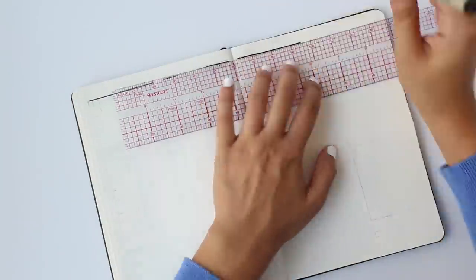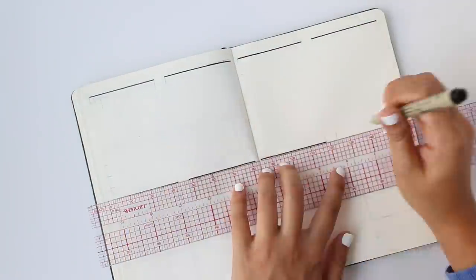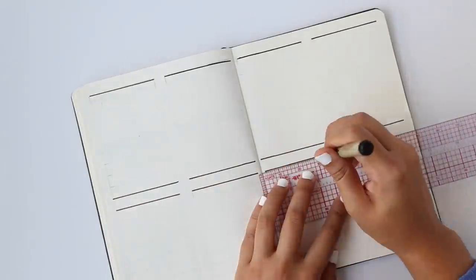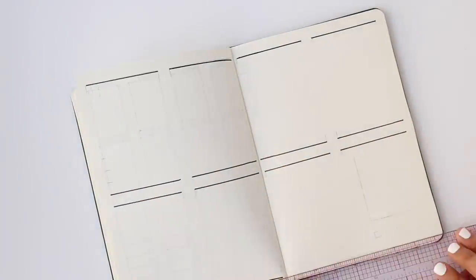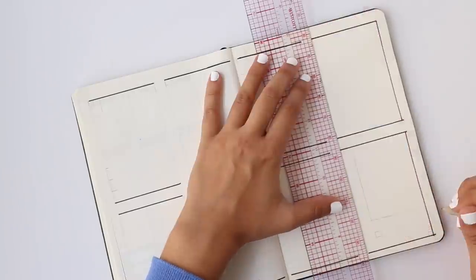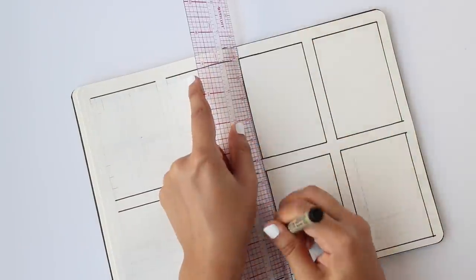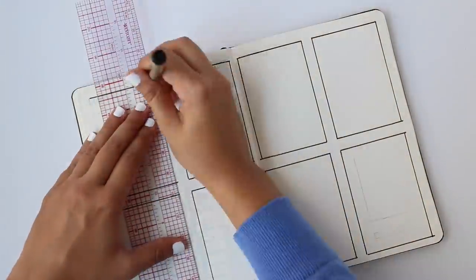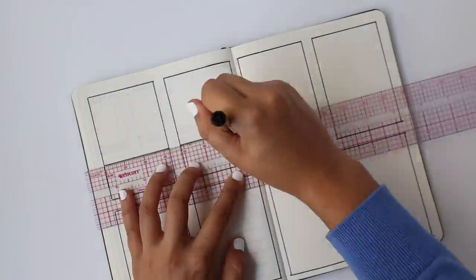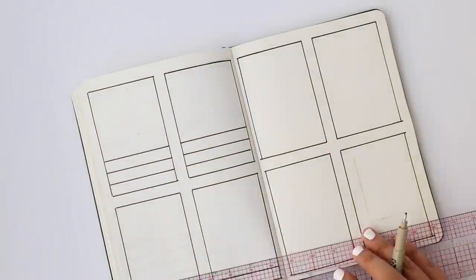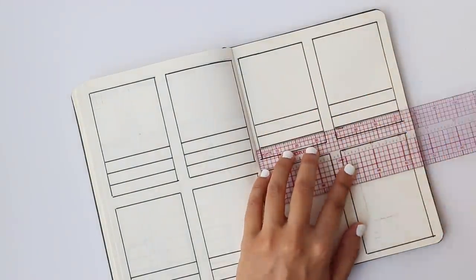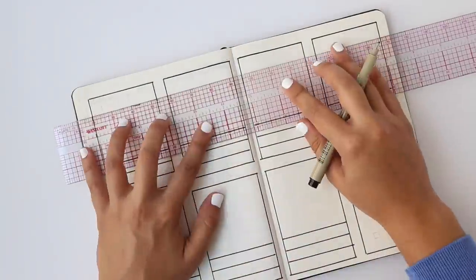The second weekly spread and the final spread in this video takes a more rectangular box approach to the weekly spread. So again there's eight boxes but this time the eighth box is being used as a dedicated spot where we can have a study and a sleep tracker separated from the daily planning, but the menu planners are still incorporated into the daily sections.